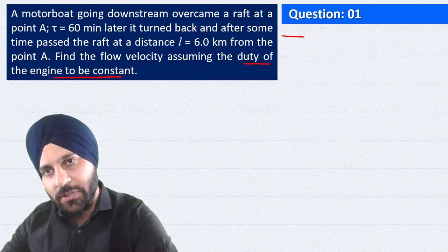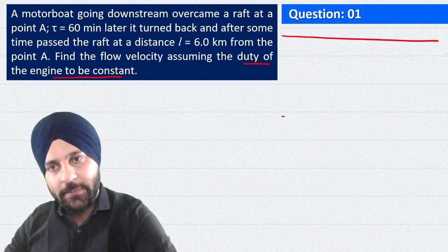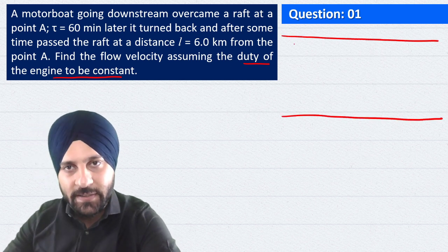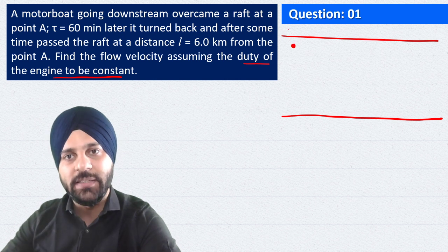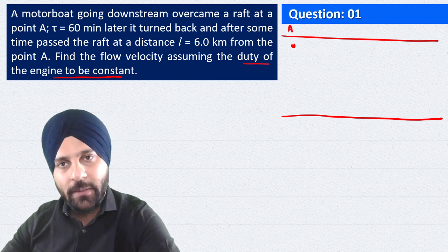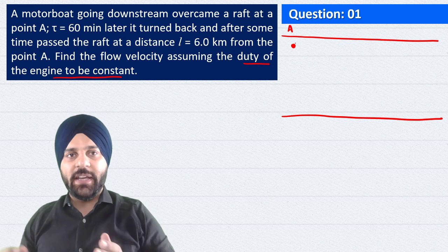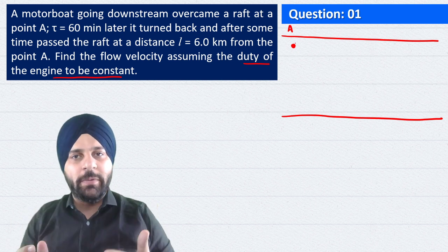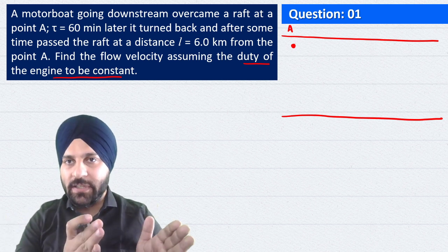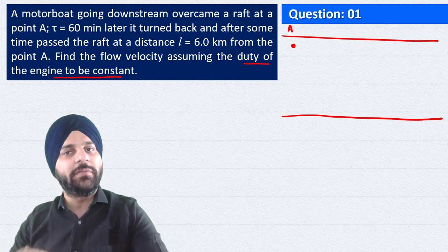So students, ek diagram ki help se is question ko samajhte hai. Hum sabse pehle point consider kare le, point A. Aur maan le humara raft yaha hai. Raft aap maan sakte hai wooden block bhi ho sakta, wo river ke sath hi aage ki taraf ja raha hai.